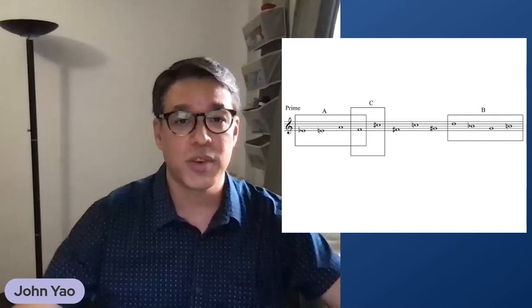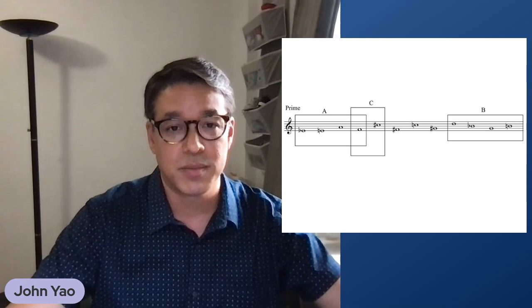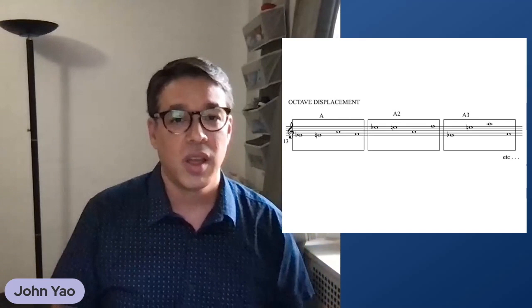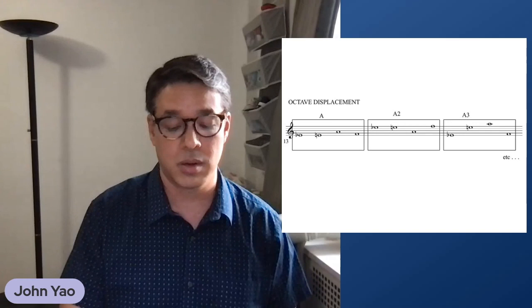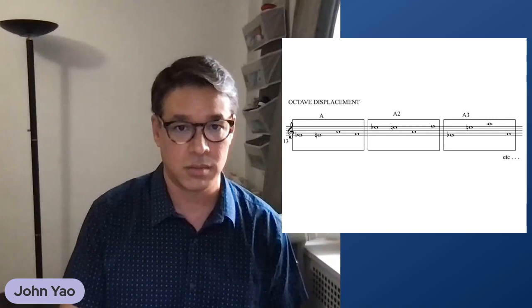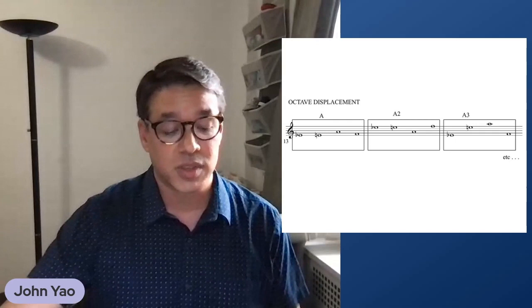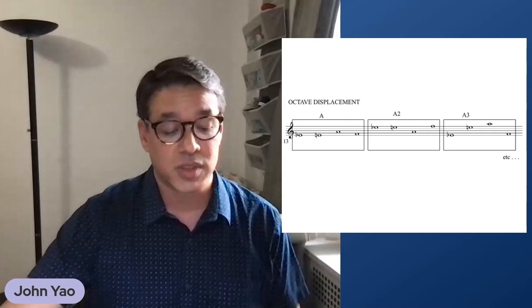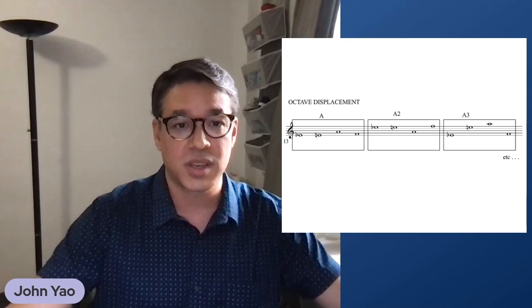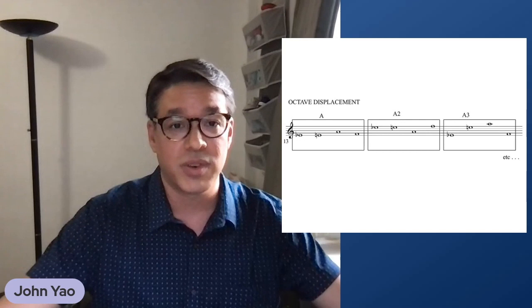The first tool we're going to use is called octave displacement. If you look at this slide, you can see I've taken this simple four-note group and moved some of these notes up and down an octave. The second group has the same sounding pitches but in different ranges. By bumping some notes up and down an octave, I've created a totally different shape, which gives a different sound and allows for different harmonic motion. It's a really simple way to get a different contour with your trichords and tetrachords. You can apply this to any version of the row — prime, retrograde, inversion, or retrograde inversion.